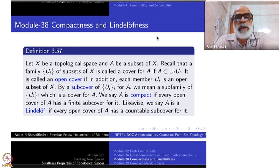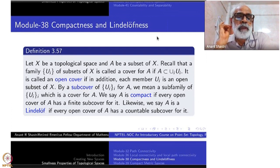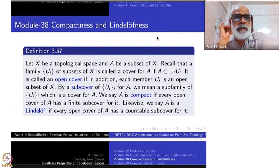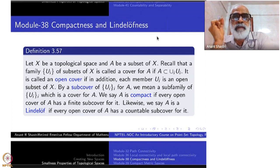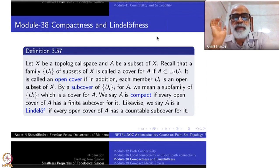Start with the topological space X. A subset of X — say A — will be called compact if the following happens: suppose you cover A by open subsets of X, some arbitrary cover, then it must admit a finite sub cover. So let me define all these things carefully: sub cover, open cover, what is the meaning of finite sub cover and so on.